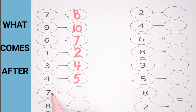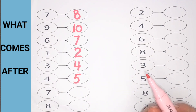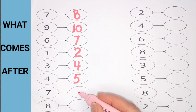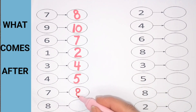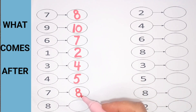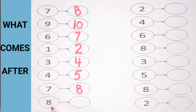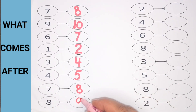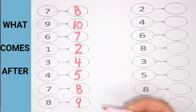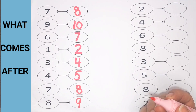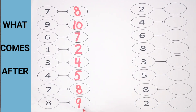7. What comes after 7? Can you guess? Yes — number 8. Here is 8. What comes after 8? 9. Number 9 comes after 8.